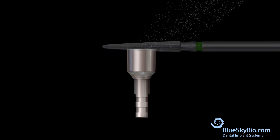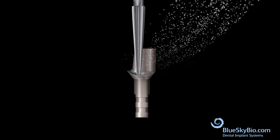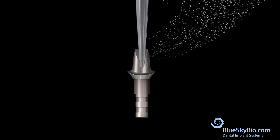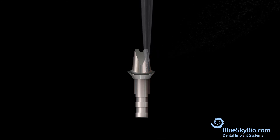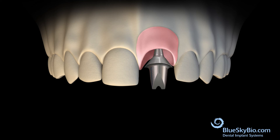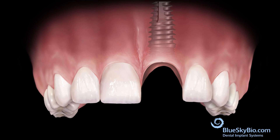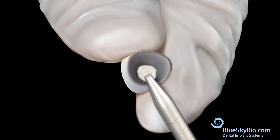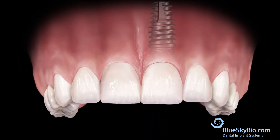Use a carbide bur to shape the multi-purpose abutment. Place the abutment into the stone model to verify the fit, then place the custom abutment in the mouth. Apply bonding material to the crown, bond the crown to the abutment, and remove excess bonding material.